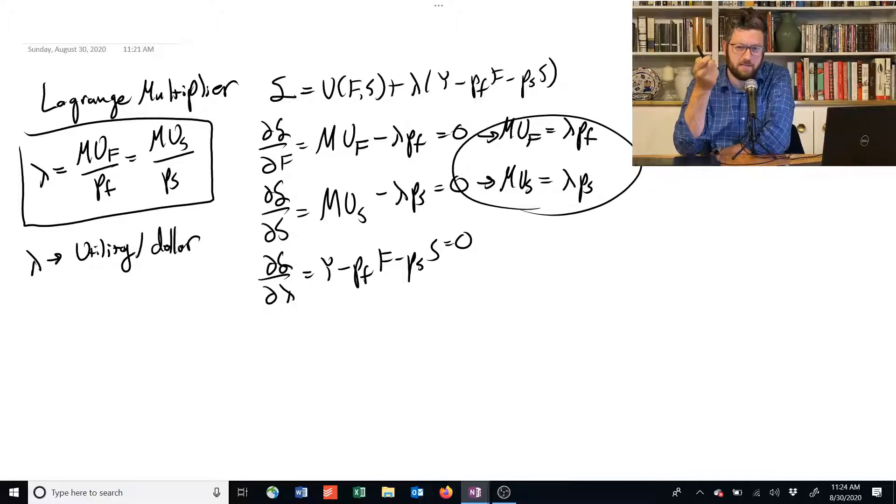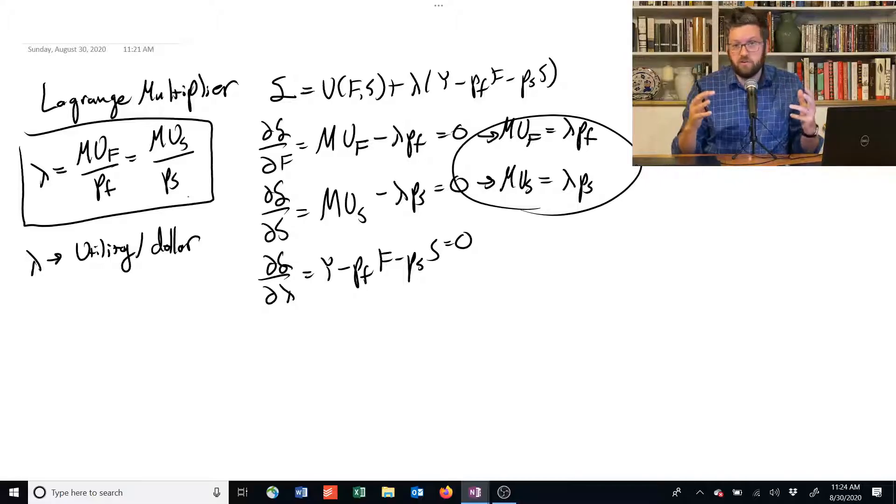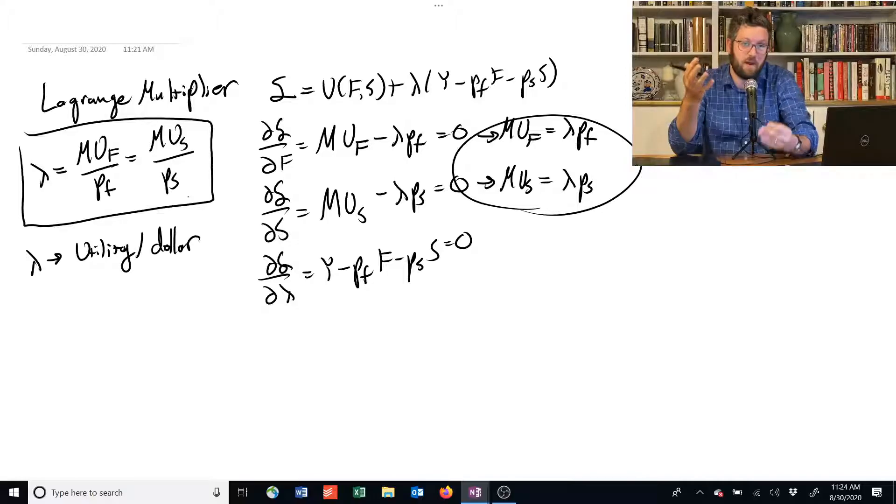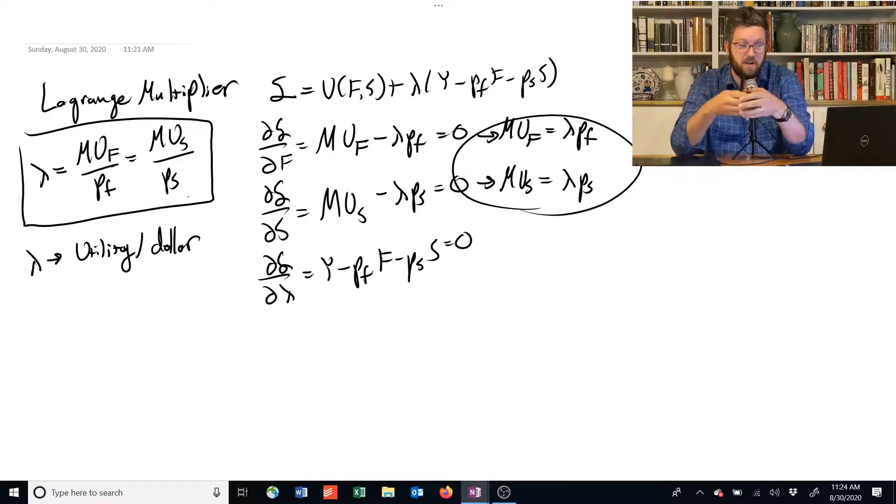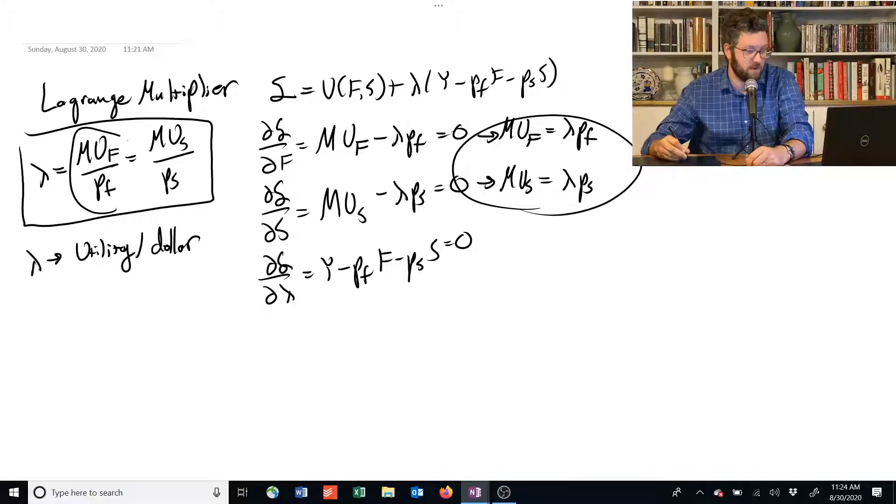Why is it the case? Because if I give you one dollar, you can increase your utility by using that to purchase food or shelter. If you use it to purchase food, the amount of extra utility you get is equal to the marginal utility of that extra food. And the amount of food you can buy is one dollar divided by the price of food. So we multiply the marginal utility by the fraction of food that you can get with that dollar, and that's what this is right here.